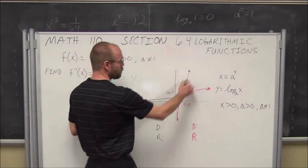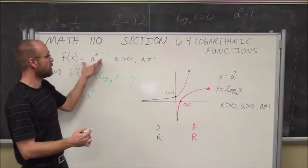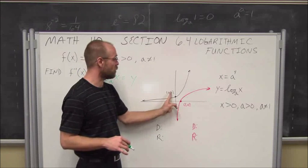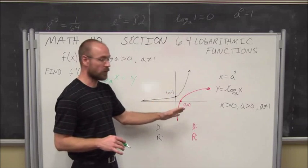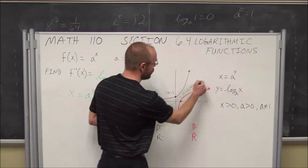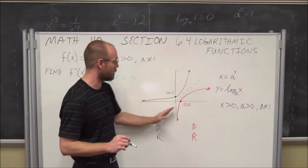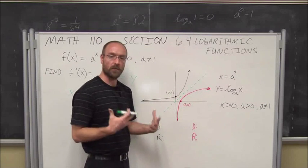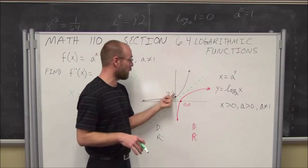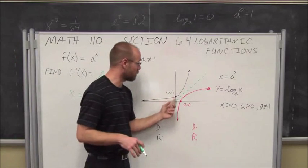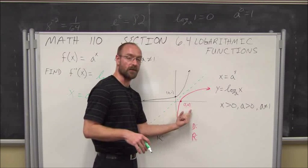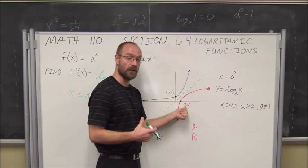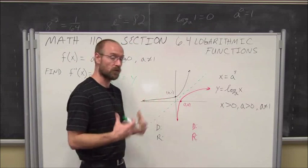If we look at the exponential function f of x equals a to the x, we have our reference point 0, 1, because anything to the 0 power is 1. Our inverse is the reflection through the identity line y equals x. Anything above y equals x is reflected to below. We replaced x with y to solve for this. Our reference point moves from 0,1 to 1,0. The log of 1 is always 0, because anything to the 0 power is 1.